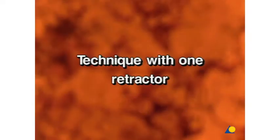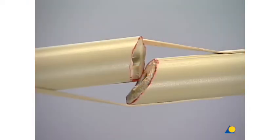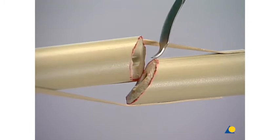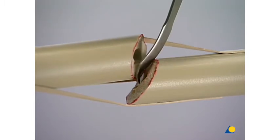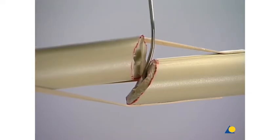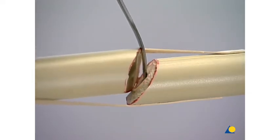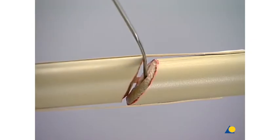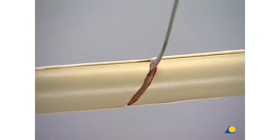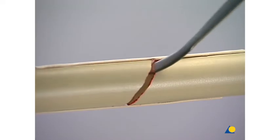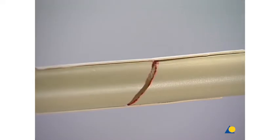Technique with one retractor. The tip of the 8mm retractor is moved along one of the main fragments towards the fracture and inserted into the fracture site. The retractor is then turned 180 degrees so that its tip is inserted into the medullary cavity. The desired extension and subsequent reduction are then achieved by tilting the retractor.